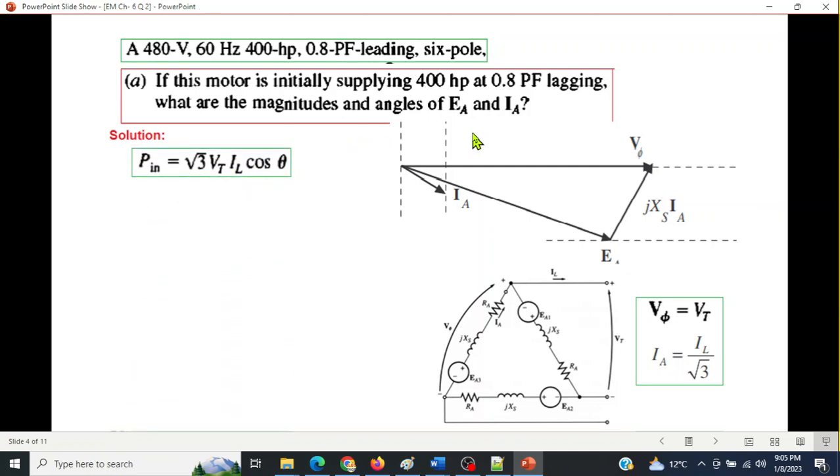So first of all, to calculate Ia, we need to know IL, the line current. Now, this is the equation for Pin, but we don't know Pin. What is given is Pout. The output horsepower is 400 horsepower. This will convert into watts. So multiply by 746. So this is the output power in kilowatt. And since there is no loss, therefore input and output will be same. So Pin will also be 298.4 kilowatt.